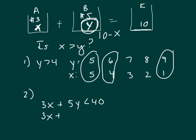So let's plug that in here. Plus 5 times 10 minus X is less than 40. Let's see what happens. That's going to be 3X plus 50 minus 5X is less than 40. That's negative 2X is less than negative 10.